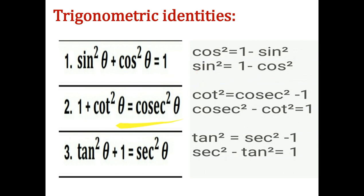The second trigonometric identity is 1 + cot²θ = cosec²θ. From this, cot²θ = cosec²θ − 1, and cosec²θ − cot²θ = 1. The third identity is tan²θ + 1 = sec²θ. This can also be written as tan²θ = sec²θ − 1, or sec²θ − tan²θ = 1.